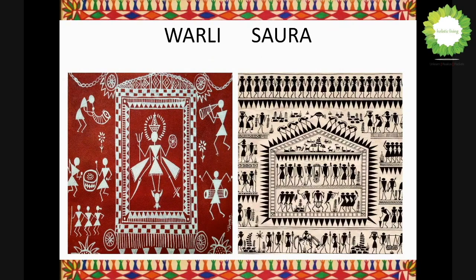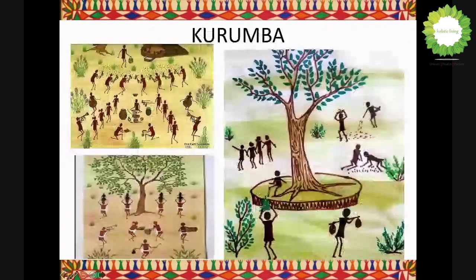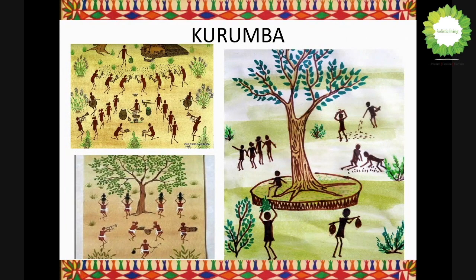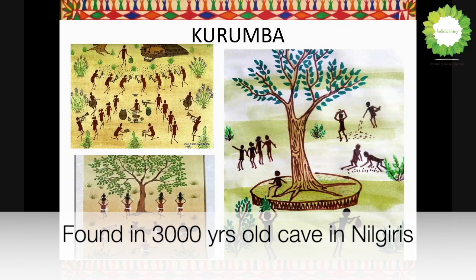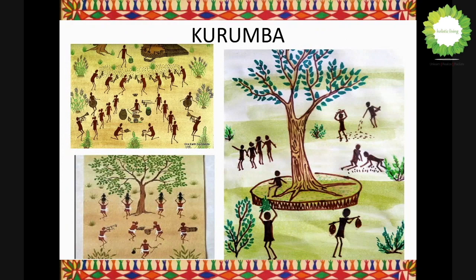Kurumba is an art form of Tamil Nadu, followed by the Kurumba tribe of the Nilgiris. A foundation focusing on tribal art forms visited what is a 3,000-year-old cave painting in the Nilgiris and came across this painting. The tribe said it was their own tradition, but by the time researchers got there, only one old man was still following this tradition — no other member of the community was aware of this art form.